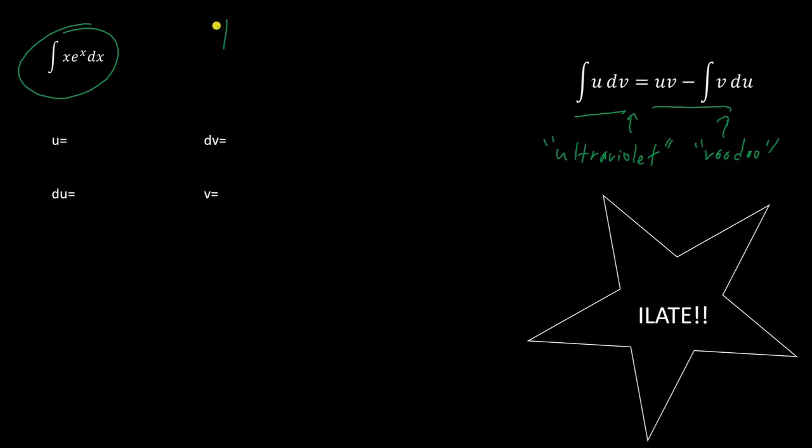The way you decide is by using ILATE. I've also seen it written as LIATE, but this is what I use. So you go down the list and the first one to appear in your function is u and the rest of the integral is dv.